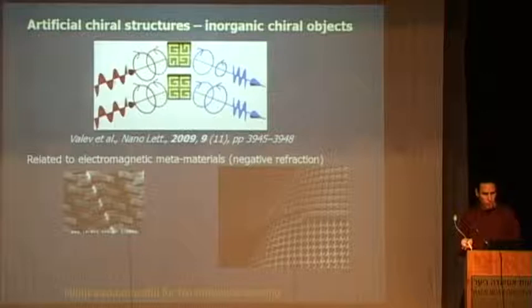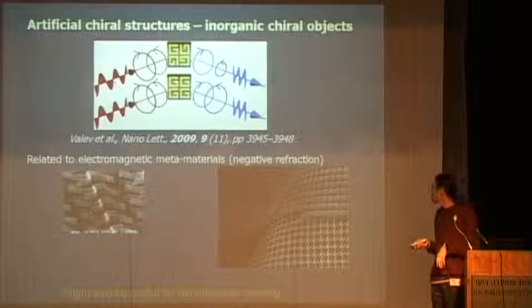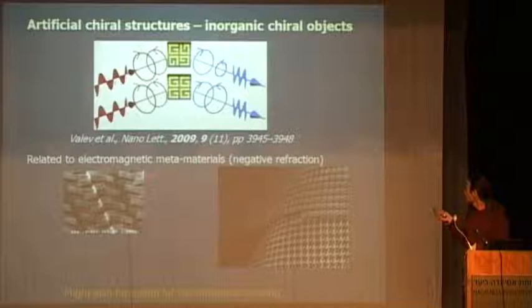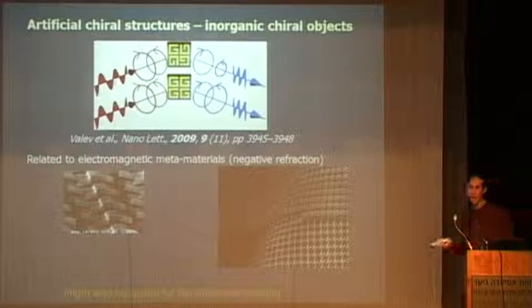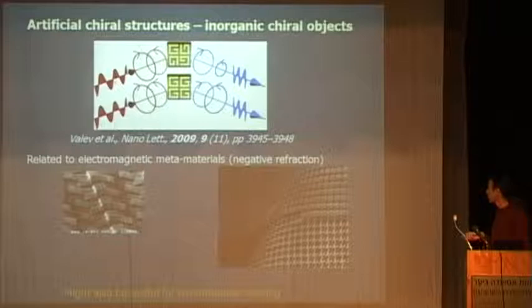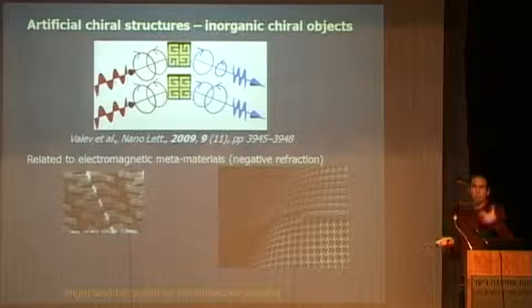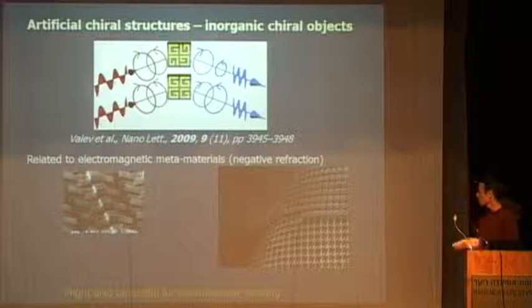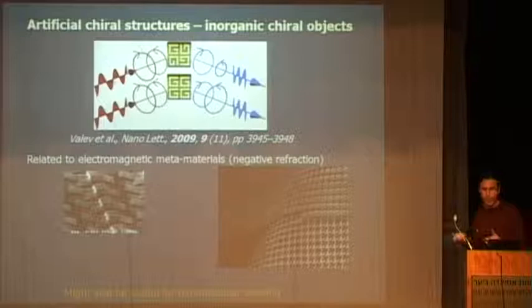There was quite a lot of work done previously on artificial chiral structures made by physical fabrication techniques — patterns with helical shapes or some asymmetry. This is related to creating metamaterials with interesting optical properties that can do all kinds of strange things to light passing through them. We are also thinking it could be useful for biomolecular sensing — sensing biomolecules that have this property of chirality.